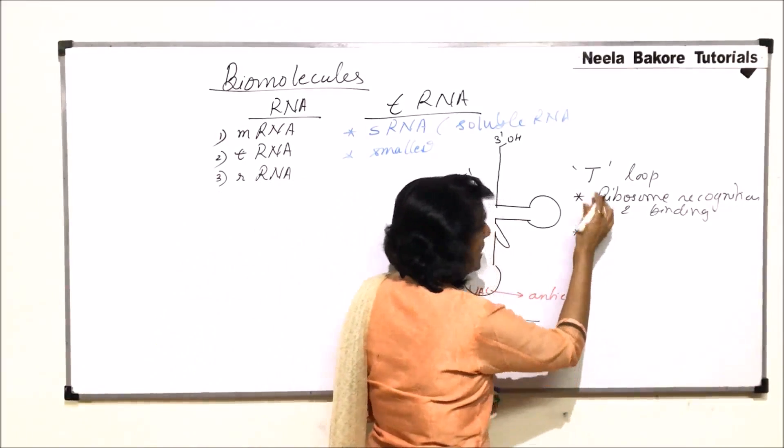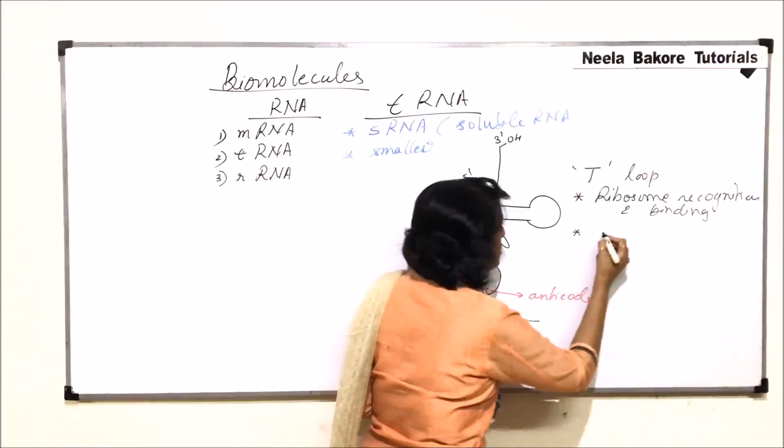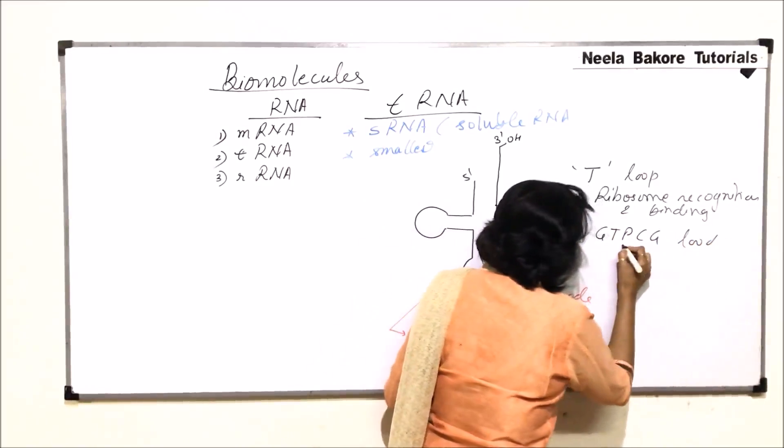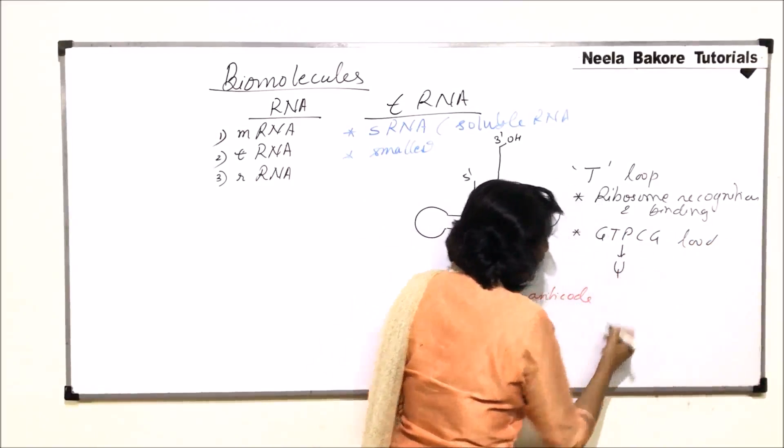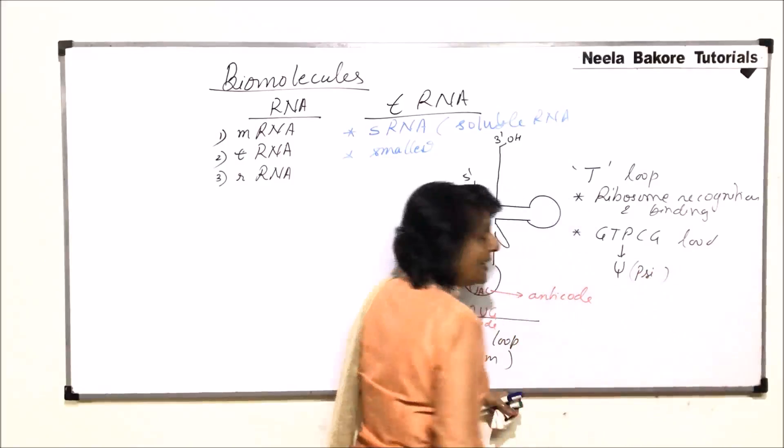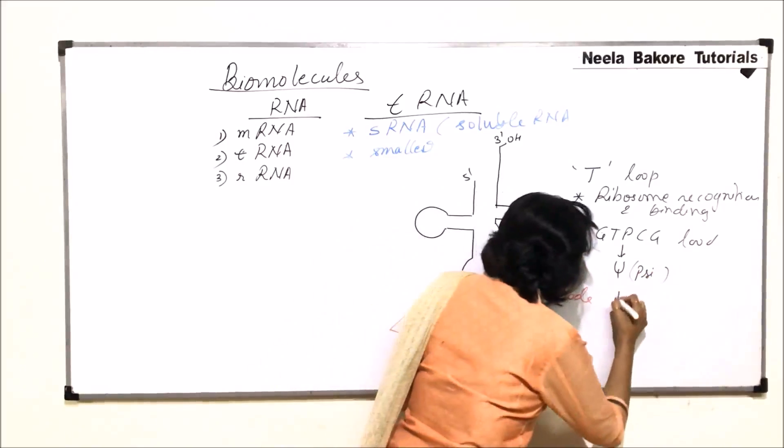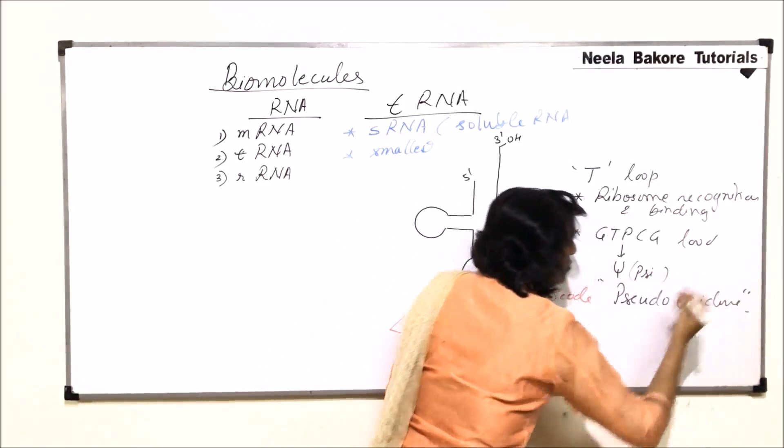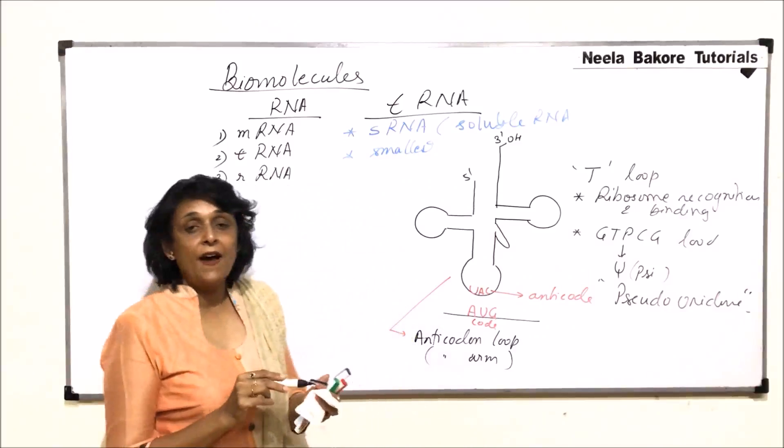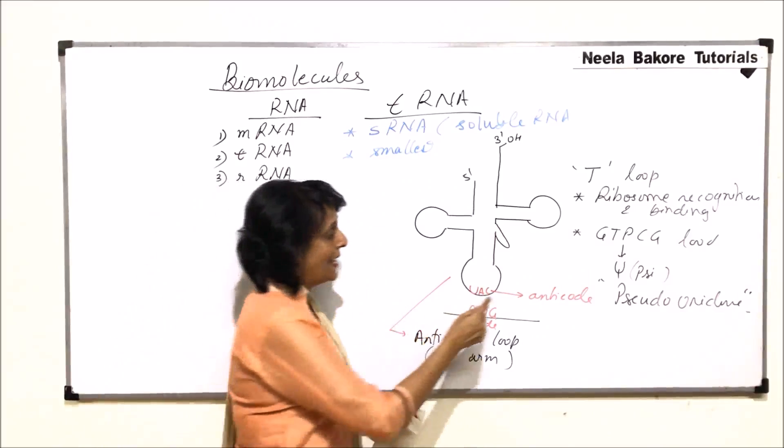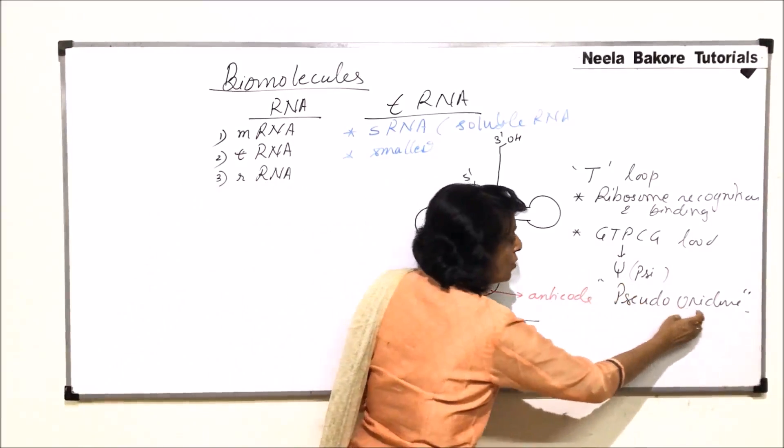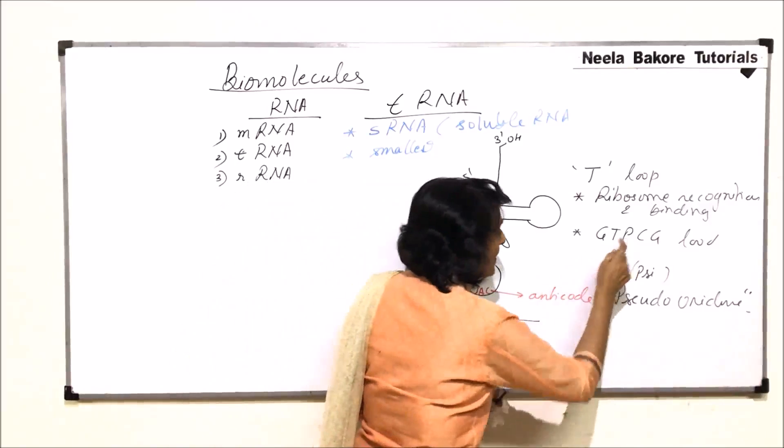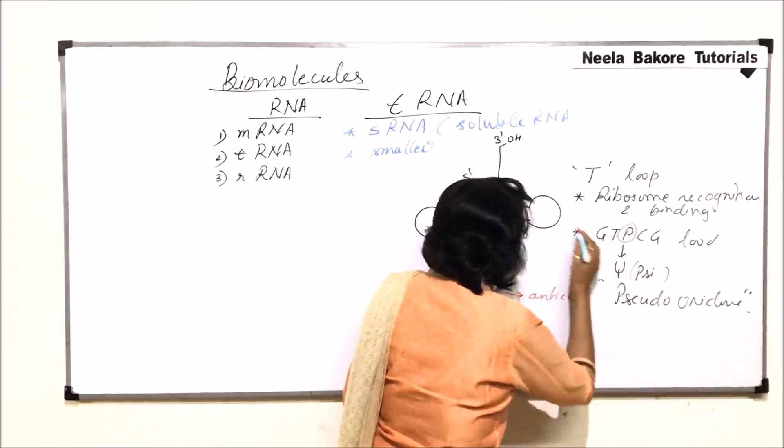There is one more term or name which is given to this loop. It is known as GTPCG loop. Here this P is also represented by Psi and it stands for pseudouridin. That means uracil is modified into a different type.